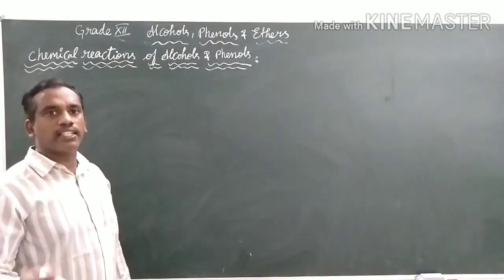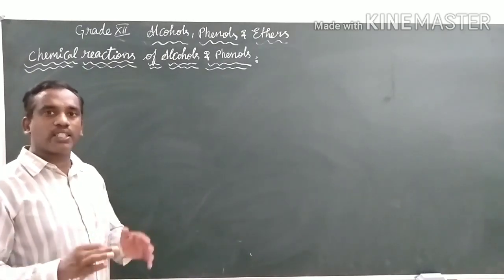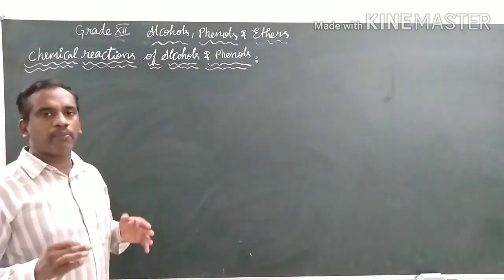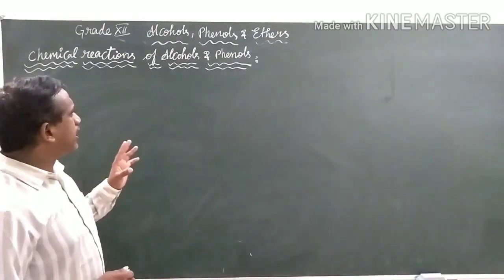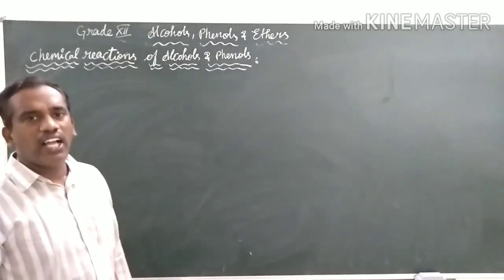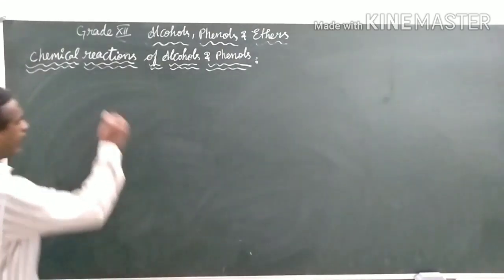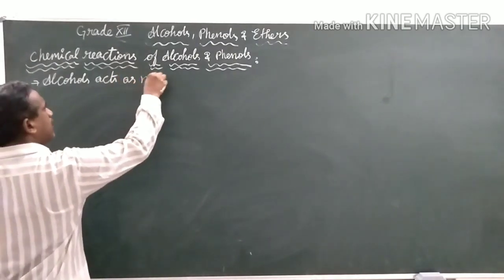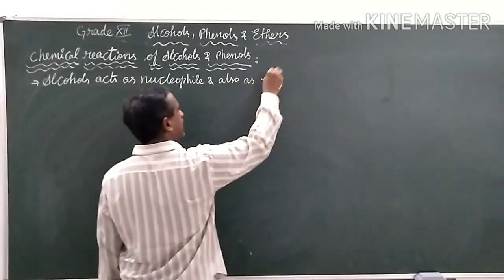These chemical reactions are the chemical properties of alcohols and phenols. There are many sub-concepts in this main concept — it is the largest concept in this chapter. So we will break or fragment the concepts and learn them. Alcohols can act both as nucleophiles and also as electrophiles.